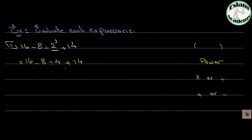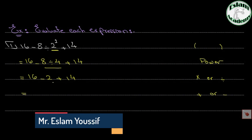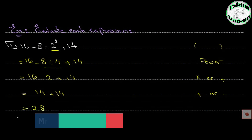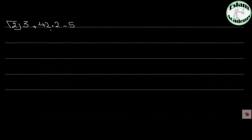Now there are no brackets and no powers remaining. We look for multiplication or division — we have division, so underline 8 divided by 4. That gives 16 minus 2 plus 14. Now 16 minus 2 is 14, plus 14 equals 28.